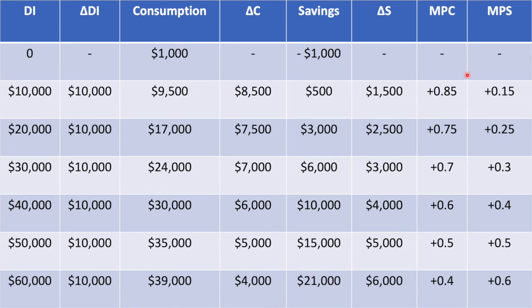Hopefully your calculations look like this. Take a moment to pause the video and check your work. The MPC is calculated by dividing the change in consumption by the change in disposable income. Similarly for the MPS, we divide the change in savings by the change in disposable income. To check our work, we can add the MPC and MPS, whose total should always add up to 1.